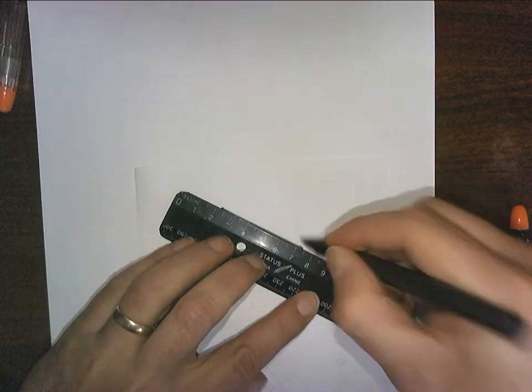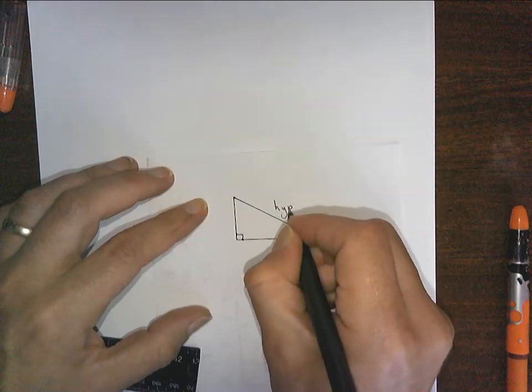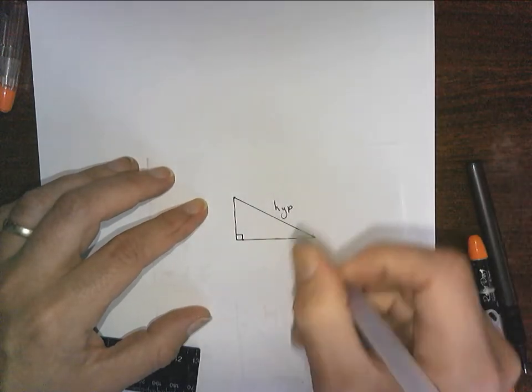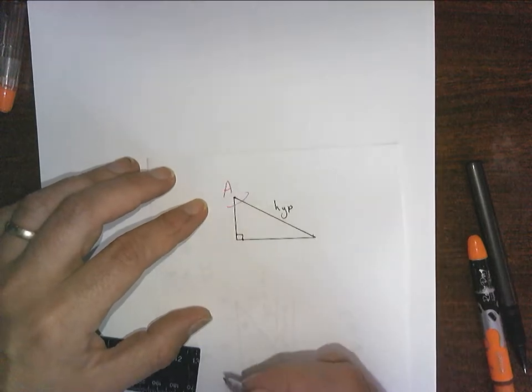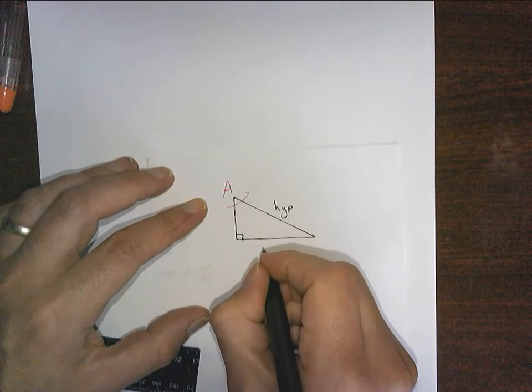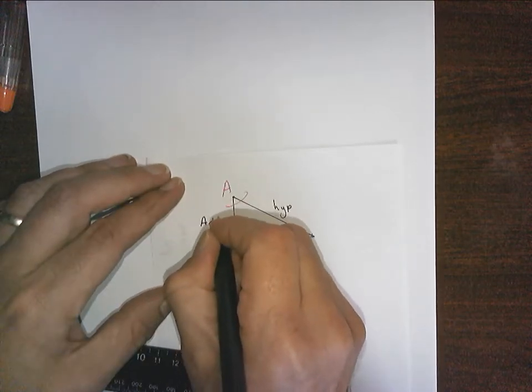So let's take any old right triangle. We get a hypotenuse, and let me give you an angle. I'll call this angle A, and this will be opposite to angle A. This will be adjacent to angle A. We learned all that in the previous video.